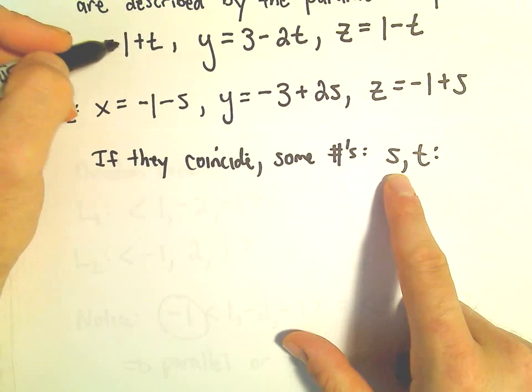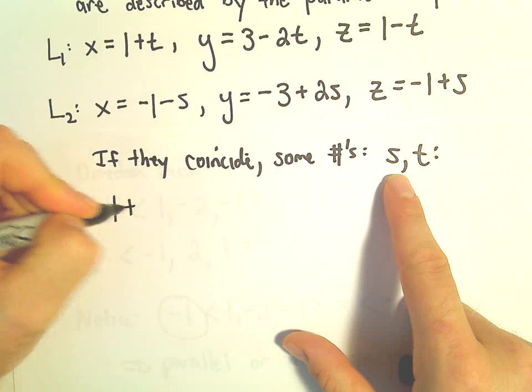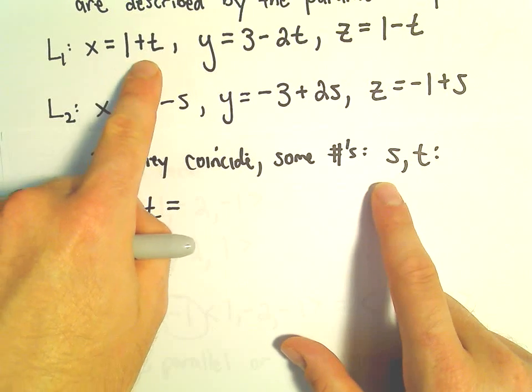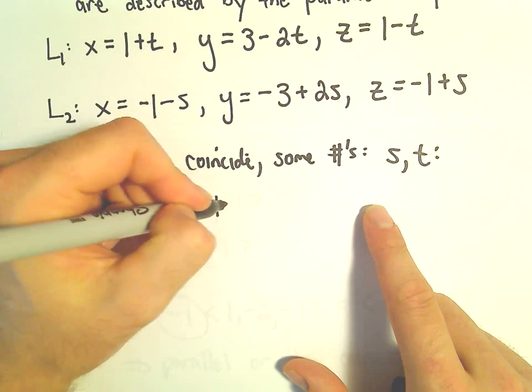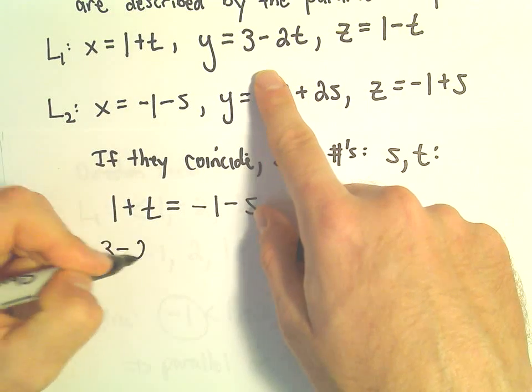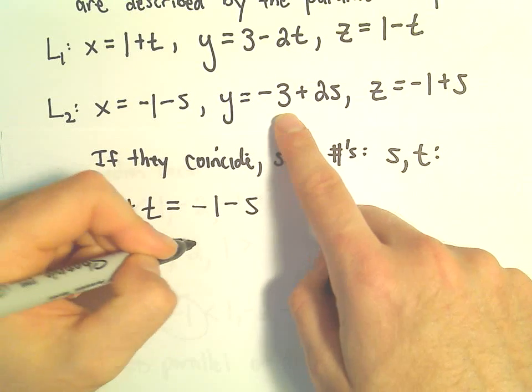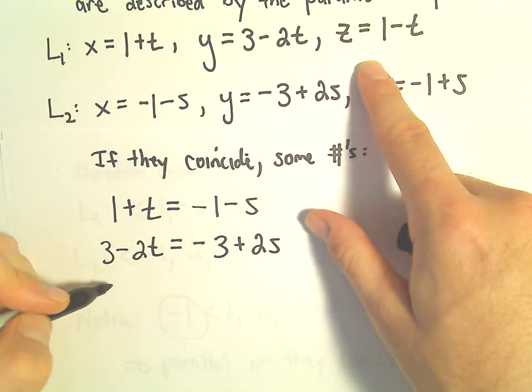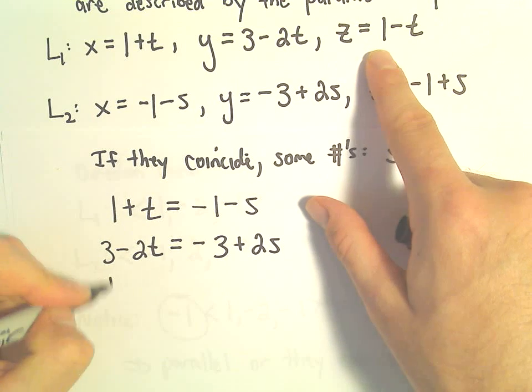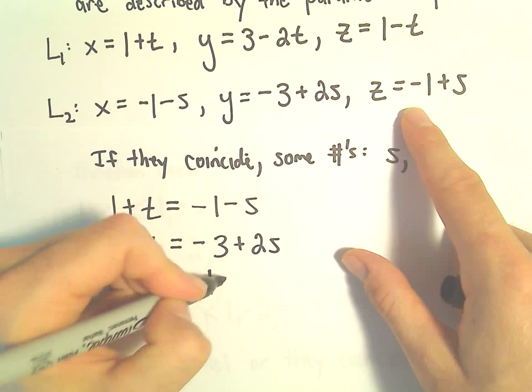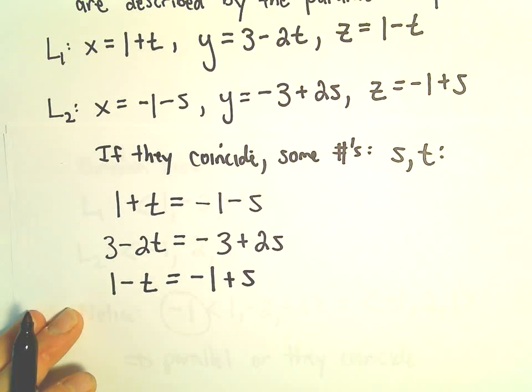So if there is some point of intersection, the x-coordinates would have to be equal. So that means there would have to be some value for s and t so that 1 plus t equals negative 1 minus s. Likewise, the y-coordinates would have to be equal. So 3 minus 2t would have to equal negative 3 plus 2s. And then there would have to be some value so that the z-coordinates are equal.